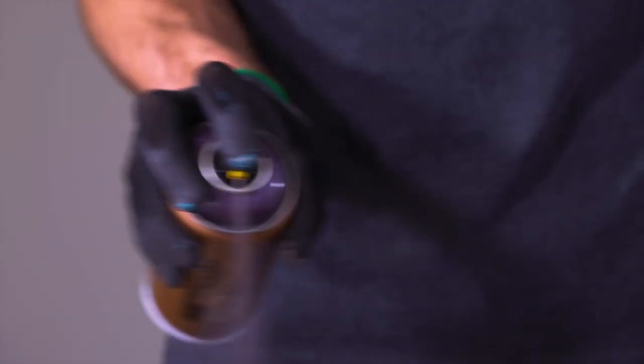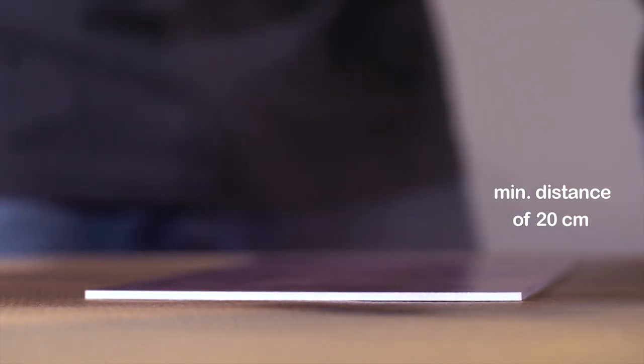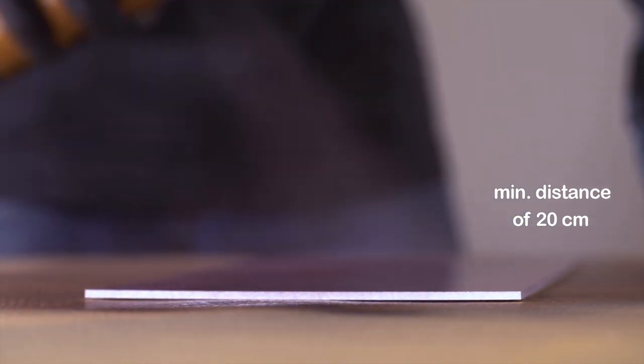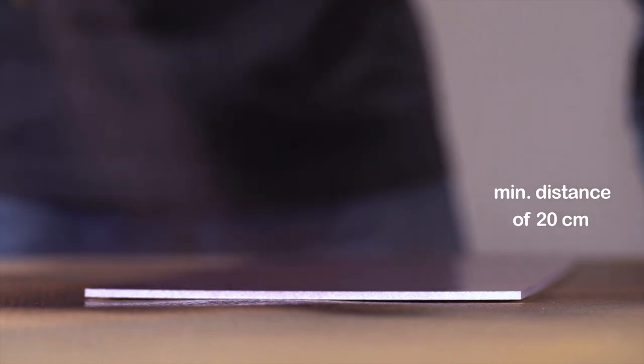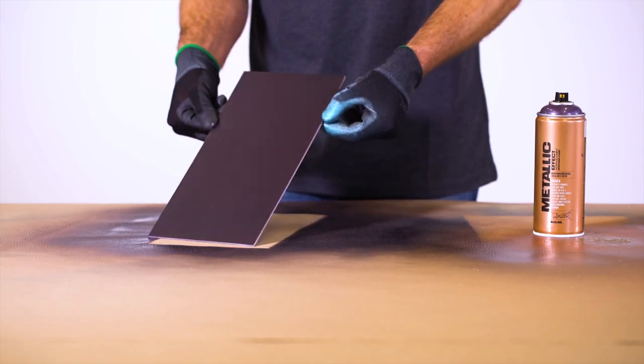For best results on pre-primed white or light color substrates, apply a minimum of 2 to 3 thin coats, allowing 10 minutes to dry between coats. Dark substrates may require more coats.